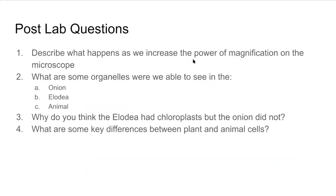Let's think about some post-lab questions. As we increase the power of magnification, the specimen gets bigger and we can see more detail. In the onion, we were able to see the cell wall, the plasma membrane inside the cell wall, the cytoplasm, and the nucleus. In the Elodea, also a plant cell, we saw the cell wall, the plasma membrane, and the cytoplasm — but we couldn't see the nucleus because it's blocked by all the chloroplasts. In the animal cell, we do not have a cell wall at all, but we do have a nucleus, cytoplasm, and a cell membrane.